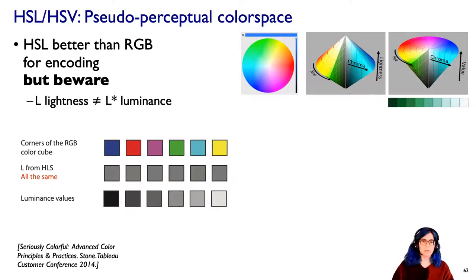The example from Maureen Stone is look at these different RGB colors. Notice how blue is a lot darker than the yellow. From the point of view, if you computed true luminance, these would be really different. But in this HLS or HSV color space, they're the same. In fact, all of the corners of that RGB color cube, the red, green, cyan, and magenta, are all the same lightness. So it is a non-perceptual color space. Beware when you're using a standard color picker if you're trying to do visualization design.